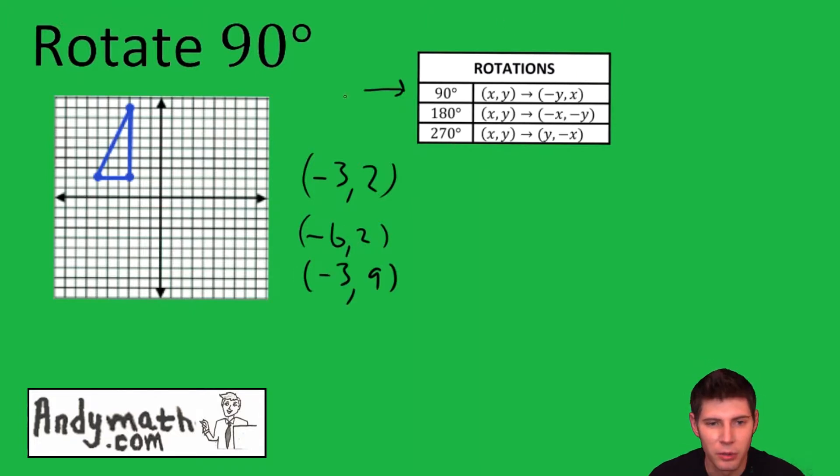Now we're going to apply this rotation. I like to do a certain part of each of the points first. So this says negative y, that means we're going to take the second value and make it negative. So that 2 becomes -2, that 2 becomes -2, and that 9 becomes -9.